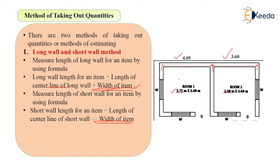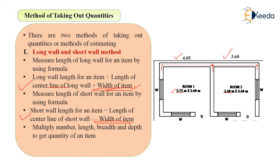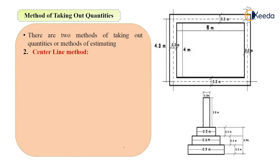You have to add the width of the specific item being calculated — for brickwork, add the width of brickwork; for excavation, add the width of excavation; for UCR masonry in the foundation, add that item's width. After calculating long wall and short wall lengths, multiply number × length × breadth × depth to get the total quantity of an item. This method is also adopted by state PWD.